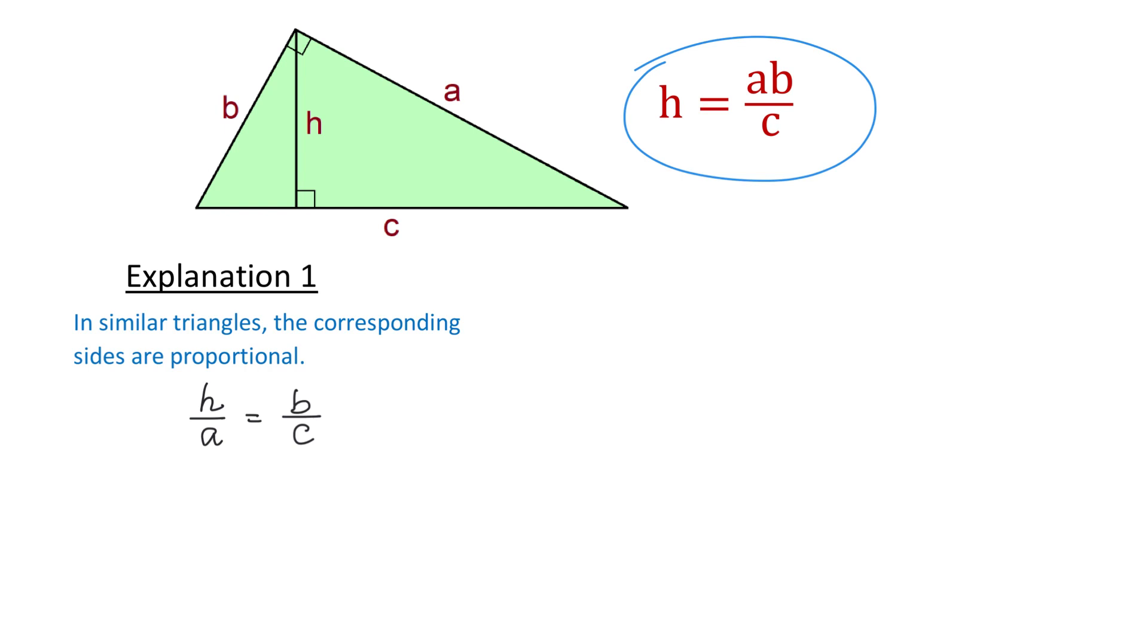And now, to solve this for H, we will multiply both sides by A. Then on the left side A will cancel, and H equals A times B over C. So we got the formula and now let's see the second explanation.